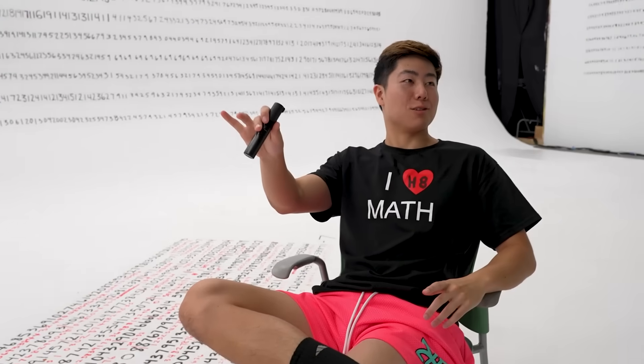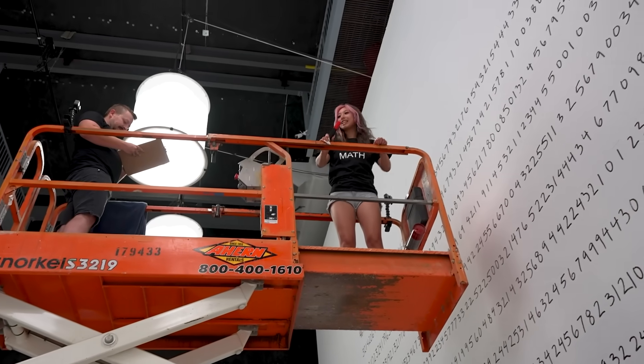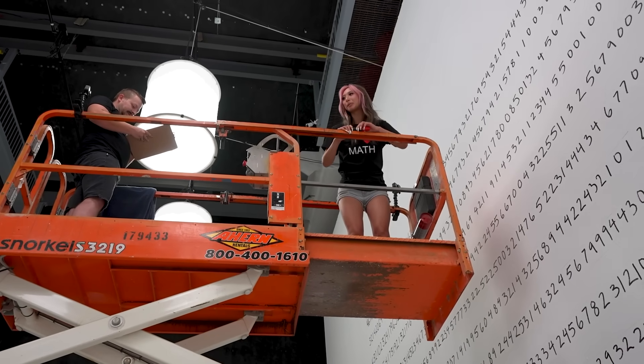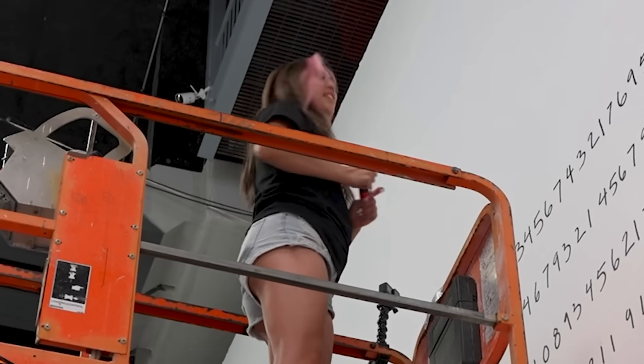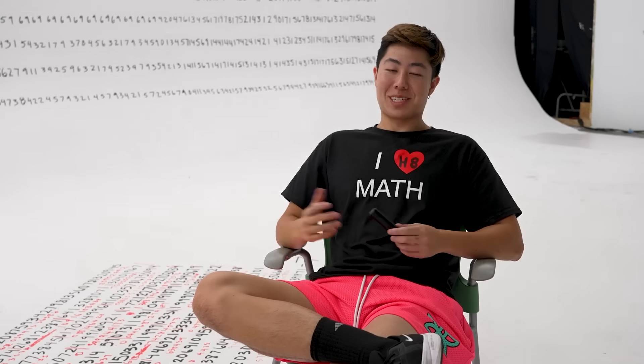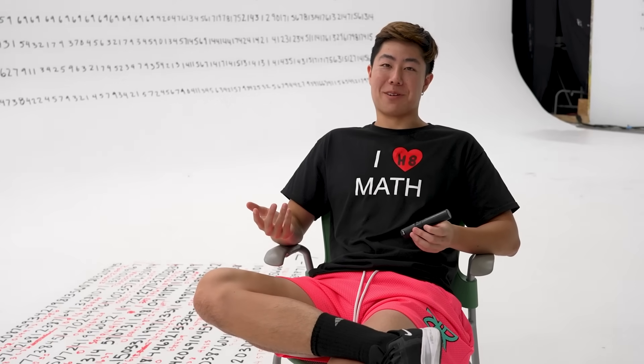Wouldn't it be so funny if in the middle of this shoot, the scissor lift breaks. Zachary, every time I get a number wrong, I get pelted with water balloons. I can do that. I'm not going to get any wrong. I'm doing well. There's 10,000 digits. She's going to get one wrong.